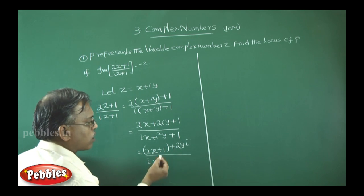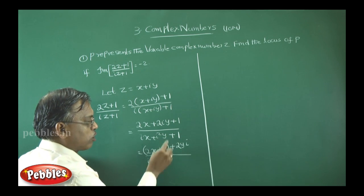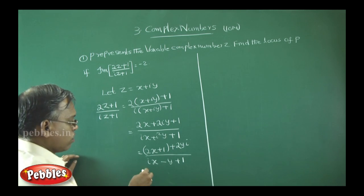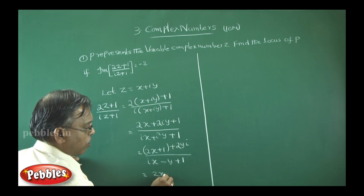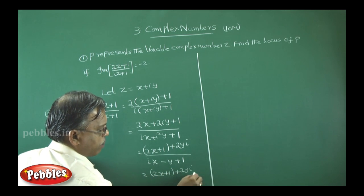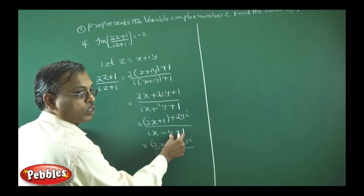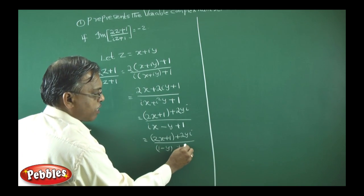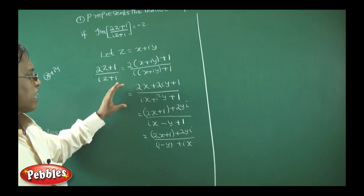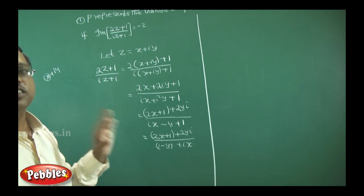So arranged in complex number form, we have [(2x + 1) + 2yi] / [(1 − y) + ix]. Both numerator and denominator are now in complex number form.